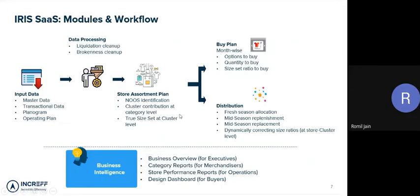Once we have all of these percentages, we take your AOP — Annual Operating Plan — and using the ASP from the last season and the cluster contribution, we predict how much quantity you should have exposed in your stores on a month-on-month basis, or conversely what quantity you should be buying and in what size set ratio.